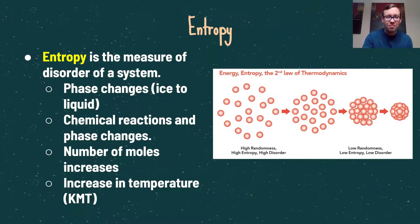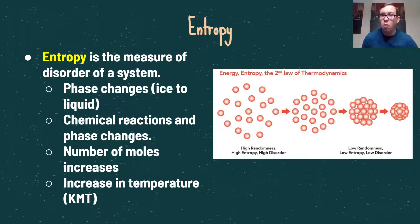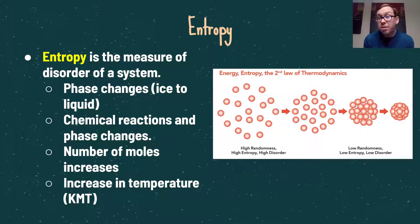Entropy is simply the measure of the disorder of a system — as entropy increases, so does disorder. Think about the spacing between molecules: for example, in a phase change between a solid and a liquid, solid molecules have more order and are closer together. As you melt ice and convert it to liquid water, you increase entropy. Similarly, if two solids react and produce a gas, that is an increase in entropy, so delta S will be a positive number.